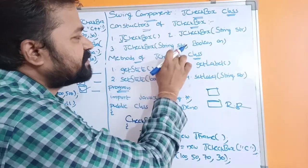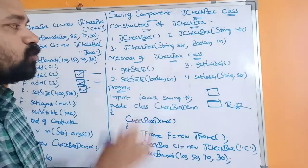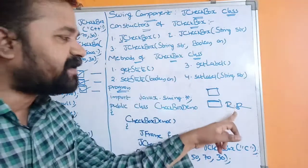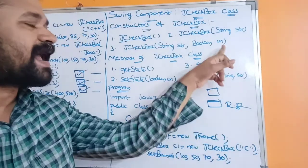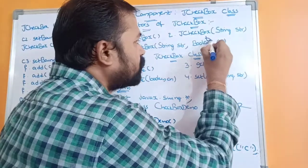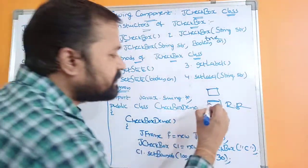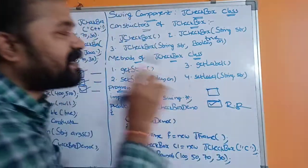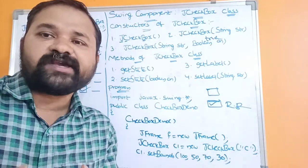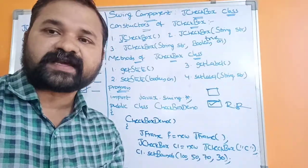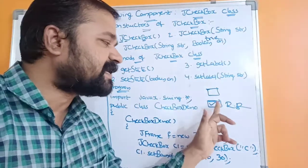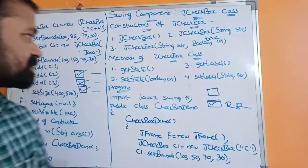The third constructor is JCheckbox(String str, boolean on). This creates a checkbox with the specified string as the label and with the specified state. If you pass true, the checkbox will be displayed with a tick mark. The default boolean value is false, so if no boolean is provided, no tick mark symbol will appear. Passing true makes the tick mark symbol appear.